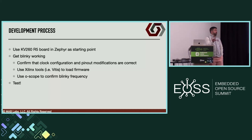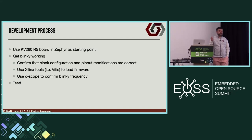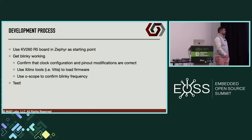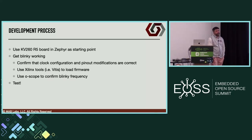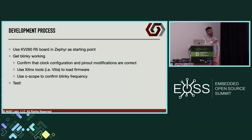Part of this exercise also involved getting the Xilinx Vitis tools working with Zephyr. There's no native Vitis support in Zephyr, so I had to get a somewhat manual setup going. Once Blinky was working, I then made the appropriate configuration and modifications to get OpenAMP working along with the echo example in the Zephyr samples.